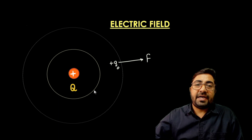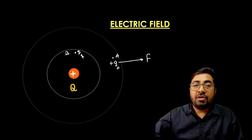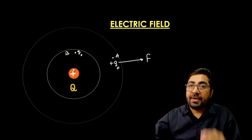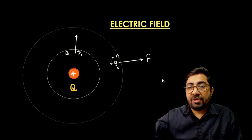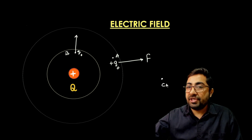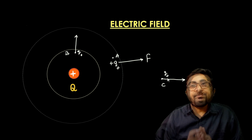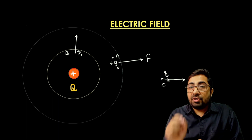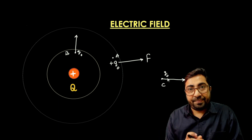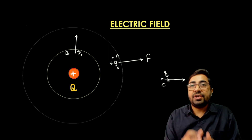If I place this charge at some different location — the first location is A, the second location is B — again, Q applies a force of repulsion on Q0. If I place Q0 at location C, again Q applies a force on Q0. So we can see Q applying force on Q0 at different locations. It means there is an effect of Q on Q0.